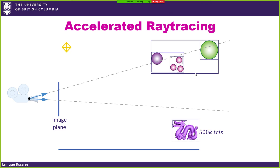If a ray intersects one of those big boxes, you go deeper in the hierarchy to the next level. You check the two bounded boxes at that level, find an intersection, go deeper again, check the object inside, find an intersection, and — assuming the sphere has no refraction or reflection — you compute your Blinn-Phong equation, define the color, and that's it. That's a good approximation for accelerating ray tracing.